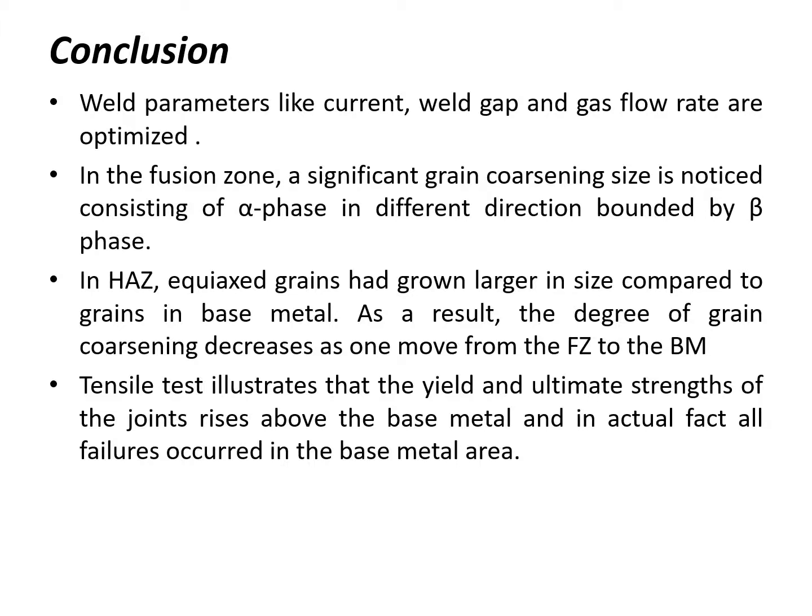Finally, the conclusion of the current work: the weld parameters of current, gap, and gas flow rates are optimized. In the fusion zone, significant grain coarsening is noticed consisting of alpha phase bounded by beta phase. In the heat affected zones, the equiaxed grains had grown larger in size as compared to the grains in the base metal. As a result, the degree of grain coarsening decreases as one moves from the fusion zone to the base metal.